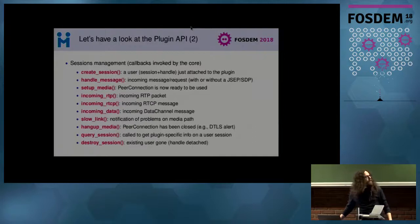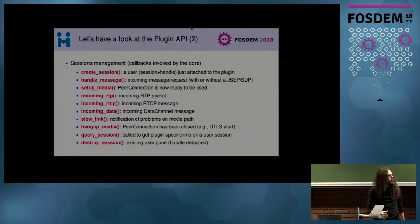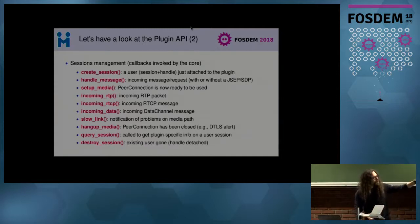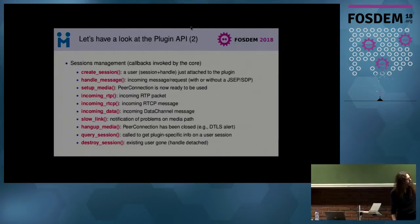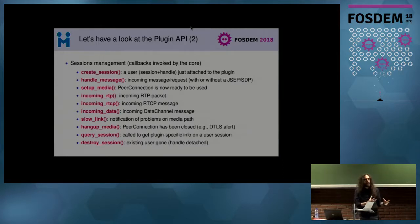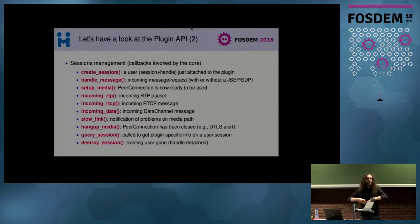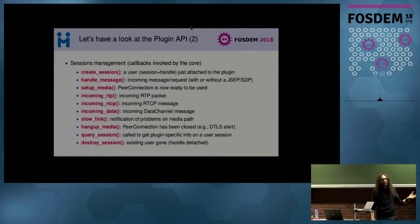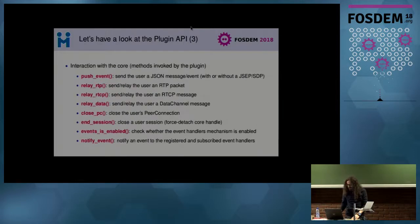Most importantly, there are ways to handle users and interact with sessions. The Janus core notifies you any time a user attaches to your plugin via a create-session callback. You receive messages from the user, get notified when a peer connection comes up or down, and most importantly are notified any time you have incoming data — RTP packets, RTCP statistics, or data channel messages.